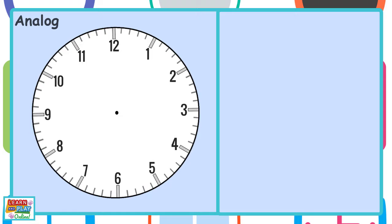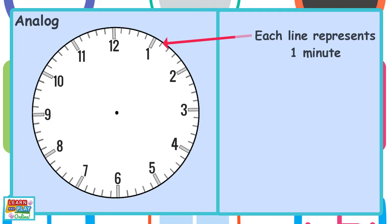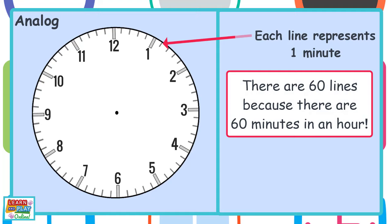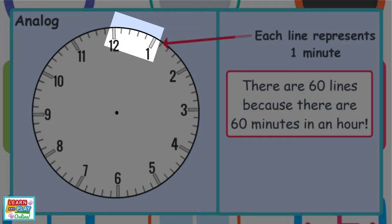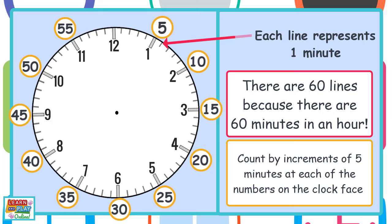You will notice that this new clock face has little lines in between the numbers. Each line on the clock face, including the ones with the numbers, represents one minute. There are 60 lines on the clock face because there are 60 minutes in an hour. Notice that there are 4 little lines in between each number, which means we can count by increments of 5 minutes each time we reach one of the numbers on the clock face.